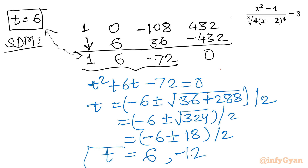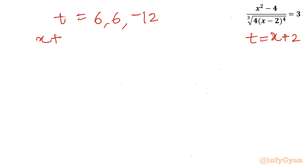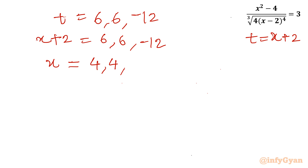So we have two t values: t = 6 and t = -12. Recalling our substitution t = x + 2, we set x + 2 = 6, giving x = 4, and x + 2 = -12, giving x = -14. These are our solutions to this challenging radical equation.